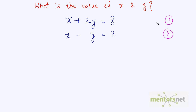So if I subtract equation 2 from equation 1, this x gets cancelled out because x minus x is 0. This minus becomes plus and 8 minus 2. So I can subtract equation 2 from equation 1 to cancel out x and get the value of y.